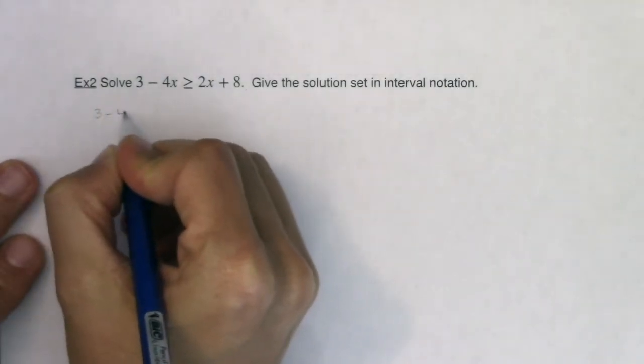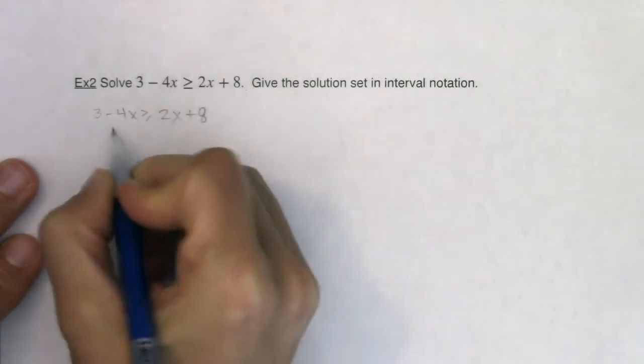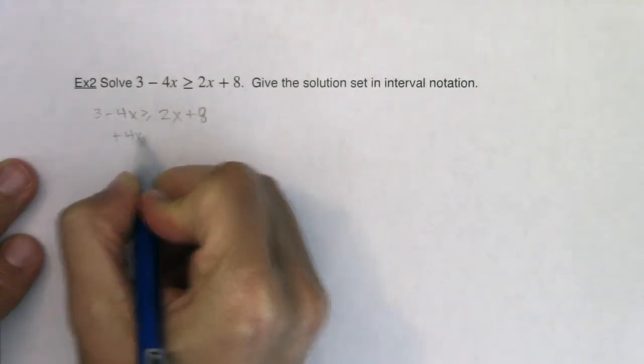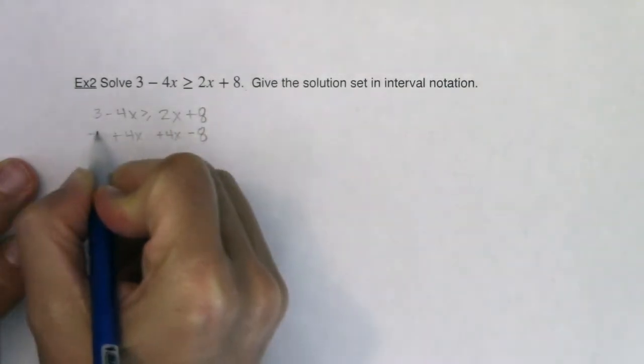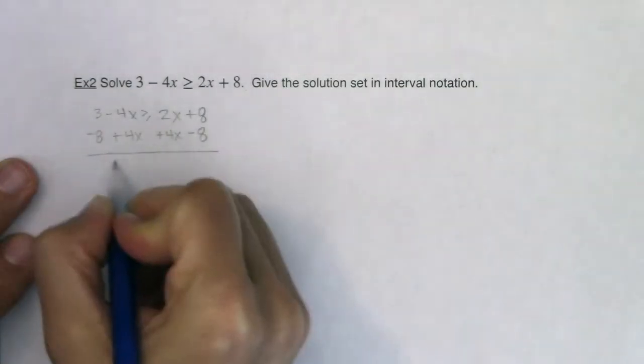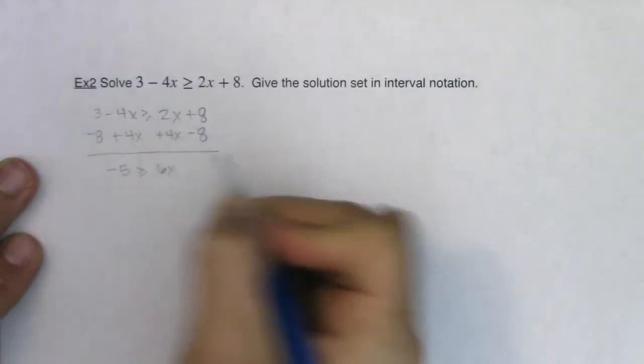So we have 3 minus 4x greater than or equal to 2x plus 8. So I personally would have added 4x to both sides and I would have subtracted 8 from both sides. And then I would get a negative 5 on this side is greater than or equal to 6x.